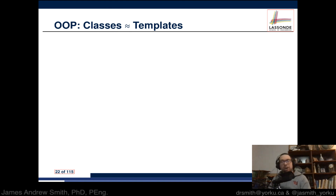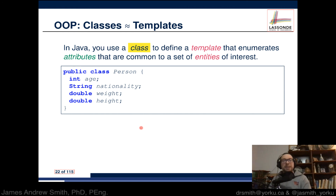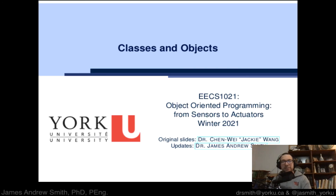Classes are referred to as templates. In Java, you use a class to define a template that enumerates attributes common to a set of entities of interest. 'Public class Person' sets up the plan — the class is called Person and has age, nationality, weight, and height. Point is another plan with variables x and y. Classes are basically templates or plans — that's a little intro to what plans are and how they relate to objects.